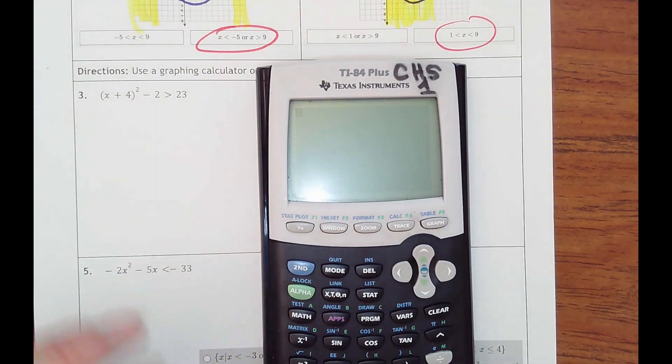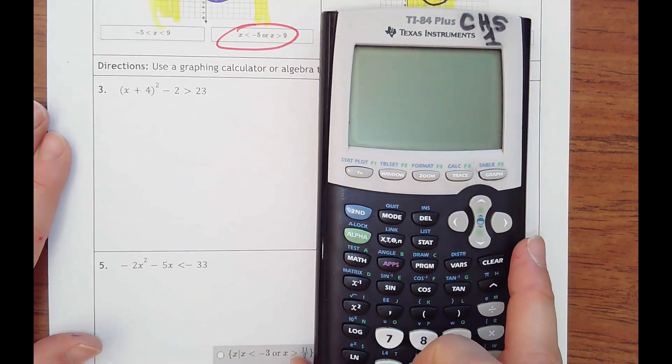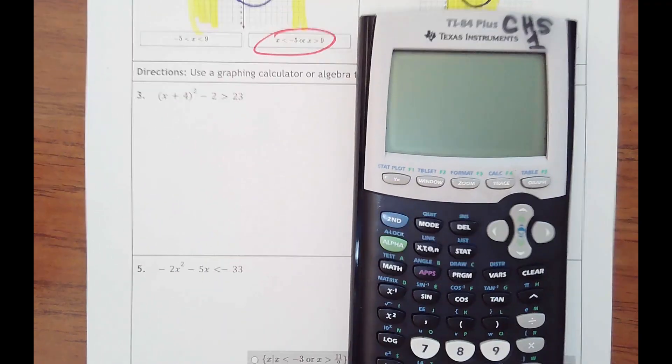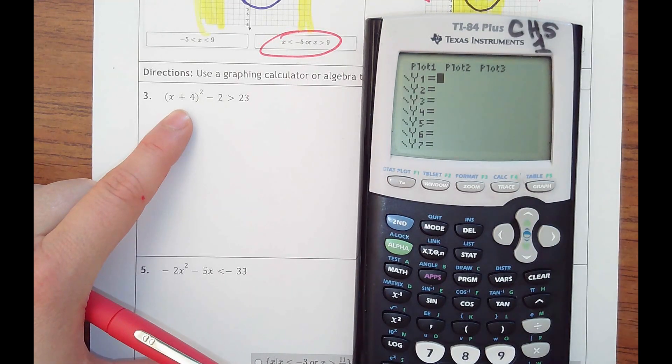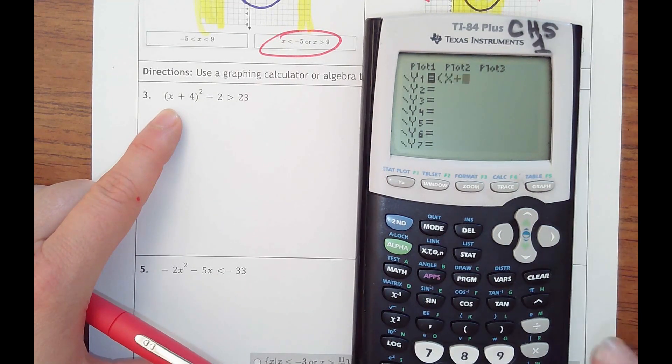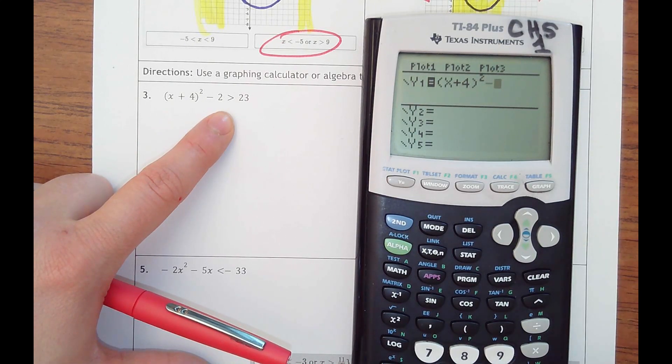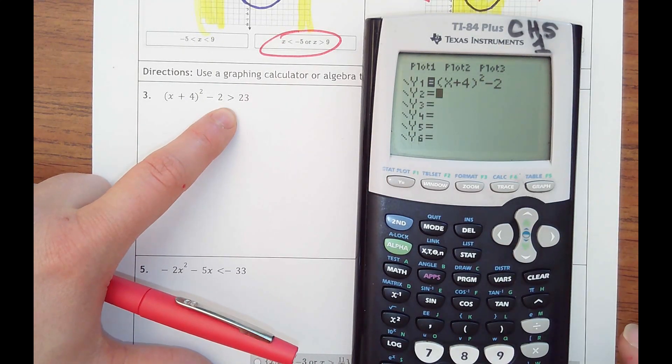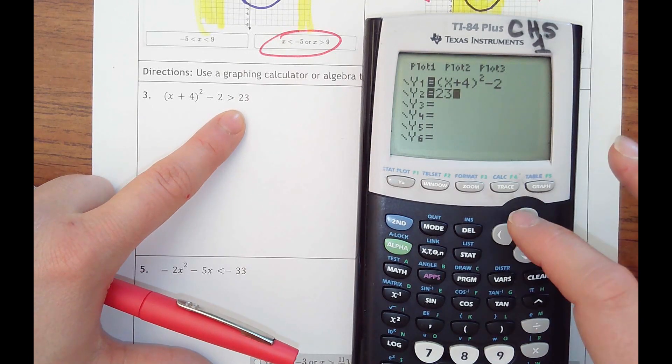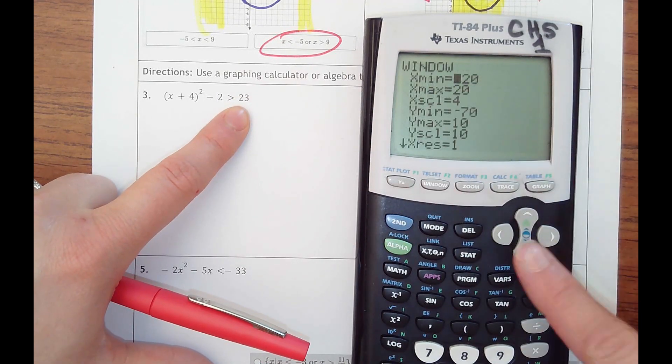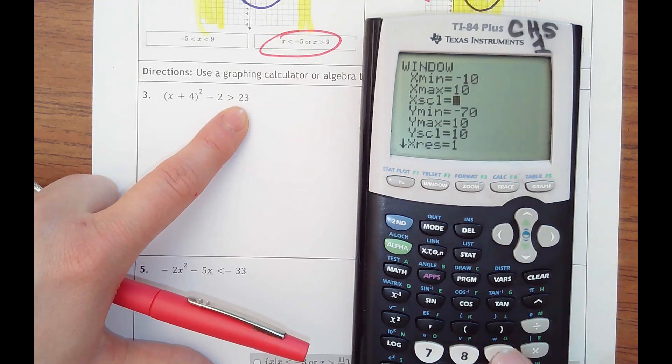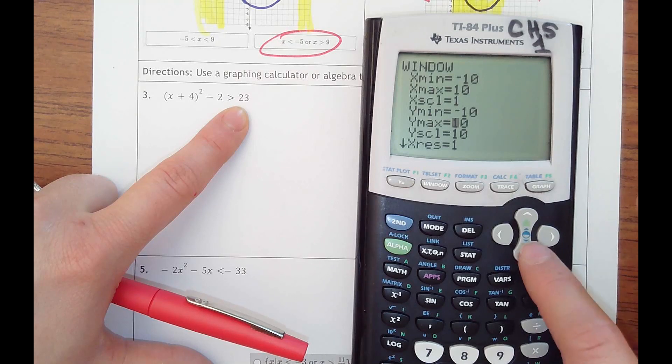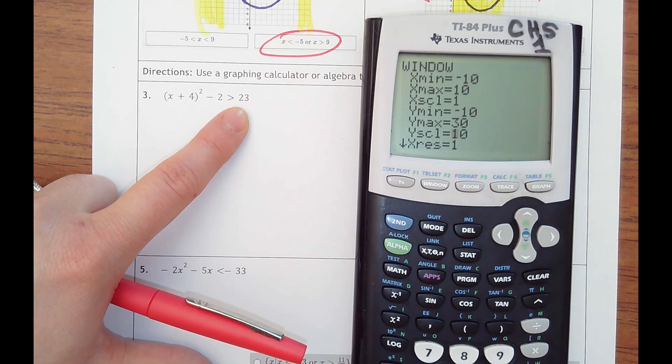Number 3. Remember you go to y equals. You could use Desmos if you wanted to. Clear out any old functions. You're going to have to put parentheses (x + 4)² minus 2. And then you would just put in y equals 23. The highest I need to go for my y's is 23, so let's just keep negative 10 to 10 count by 1, and then let's go negative 10 to 30 count by 2's.